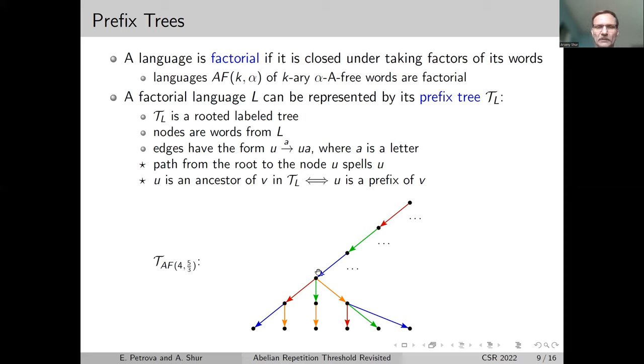And here, red-green-blue-green, we cannot add green. We cannot add blue to avoid green-blue-green-blue, which is a square. We cannot add red because red-green-blue and green-red form an abelian 5/3 power. So here we can add only orange. And here there's no orange.